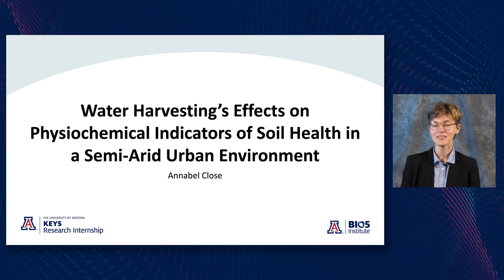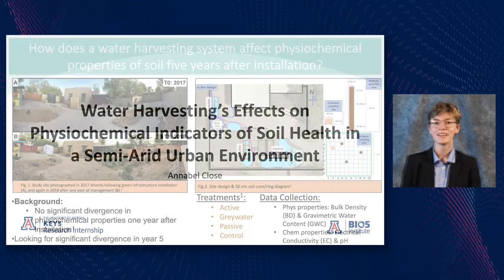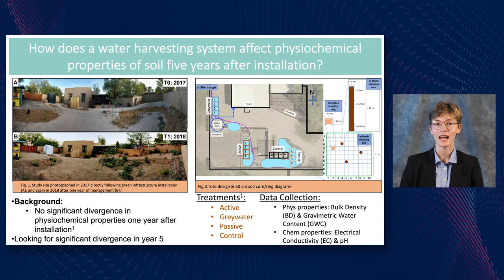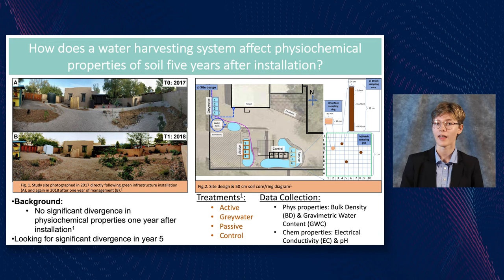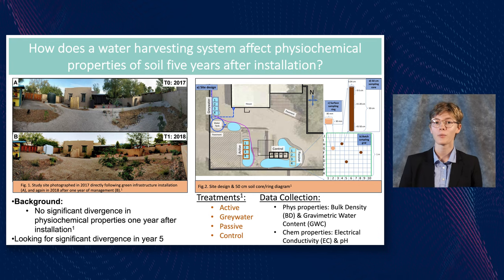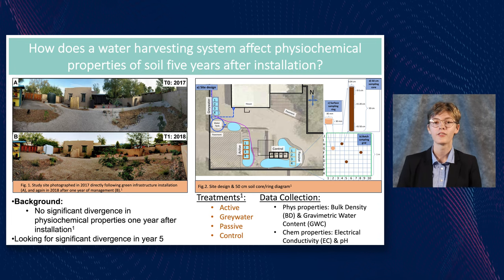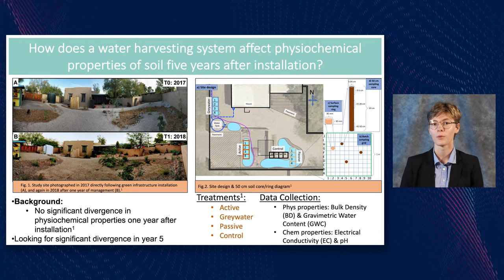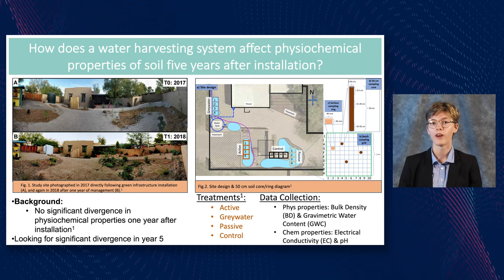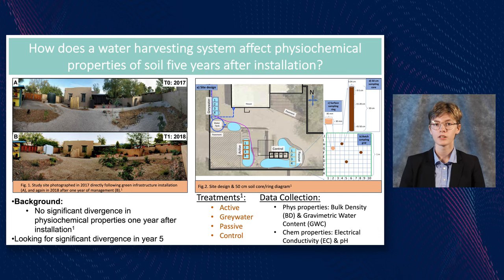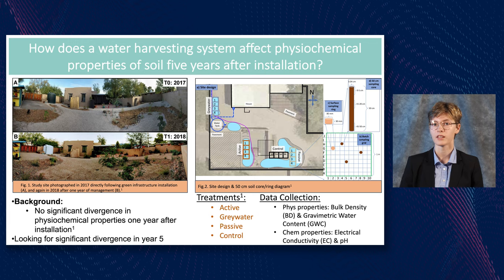Hello, my name is Annabelle Close and this summer I worked in the Meredith Lab on the rainwater harvesting project. We wanted to see how various avenues of water harvesting affect different properties of soil health. One year after a water harvesting system was installed at a single urban residence in Tucson, Arizona, the physiochemical properties of the soil were assessed with no significant divergence found. But now, five years after installation, we're looking at these properties to see if there has been any more significant divergence.